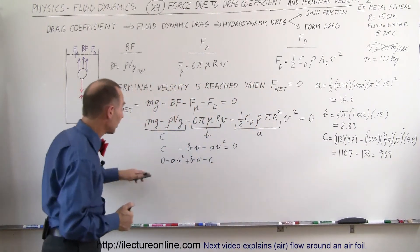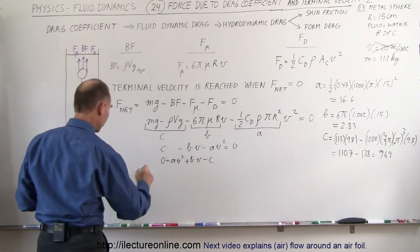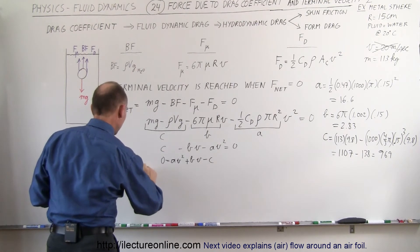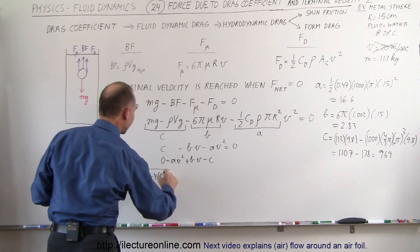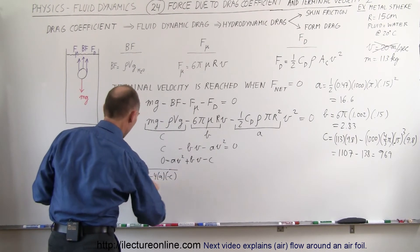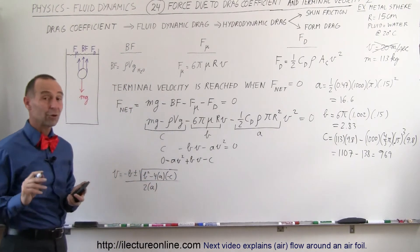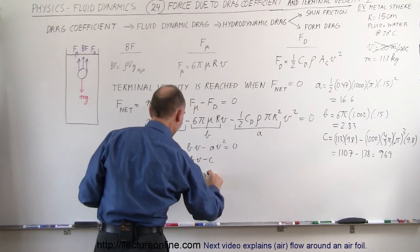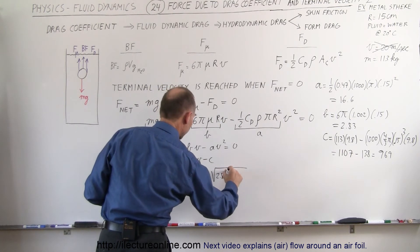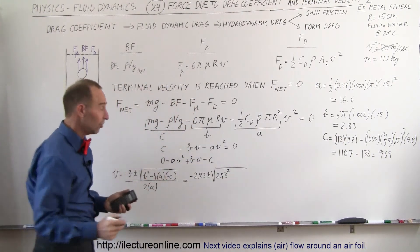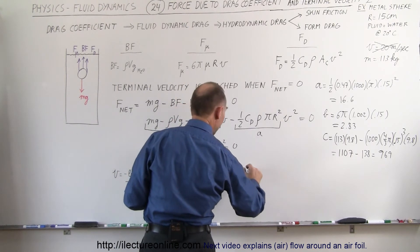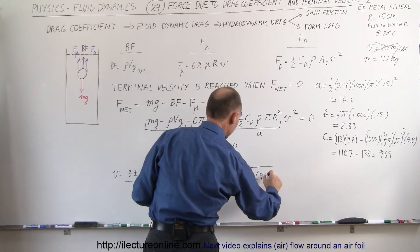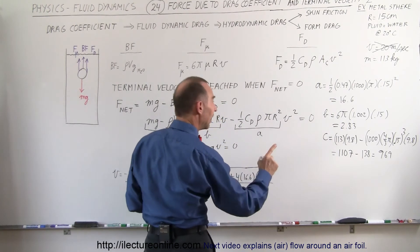Now that we have the three coefficients, we apply the quadratic formula: V = (−B ± √(B² + 4AC)) / (2A). Note that because C in our original equation was negative, the term becomes plus 4AC. Plugging in: V = (−2.83 ± √(2.83² + 4 × 16.6 × 969)) / (2 × 16.6).